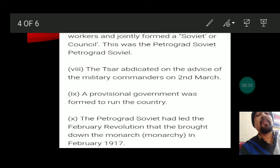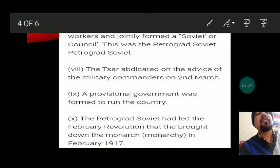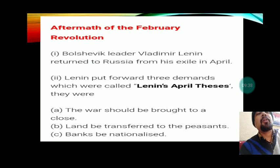The Petrograd Soviet had led the February Revolution, which brought down the monarchy in Russia. The most striking feature of the February Revolution was that it finally ended the monarchy. While many groups had wanted to remove the monarchy, none had dared to come forward. Finally, the workers came forward with the help of soldiers and members of the Duma, the revolution started, and the monarchy ended in Russia.